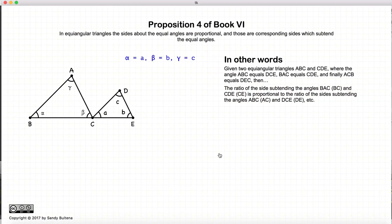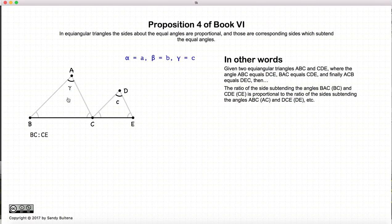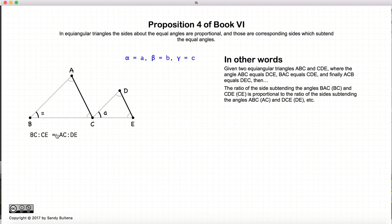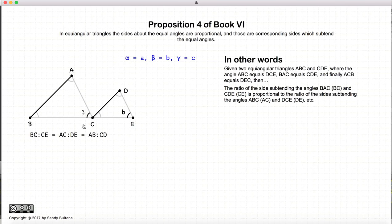In this proposition we have two triangles that are equiangular — the three angles inside one triangle are the same three angles inside the other. If we have two equiangular triangles, the ratios of the lines opposite the equal angles: since gamma and C are equal, the lines opposite them are BC and CE. The ratio BC to CE will also equal AC to DE, which are the sides opposite the equal angles alpha and A. So AC to DE equals BC to CE, and likewise that equals the ratio of the sides opposite angles B and beta.